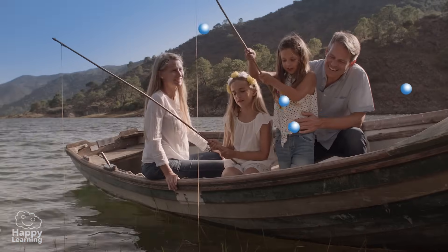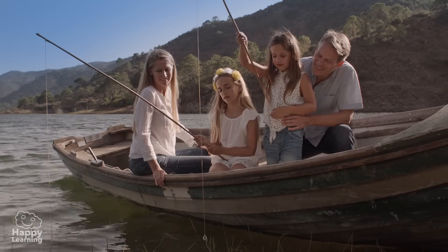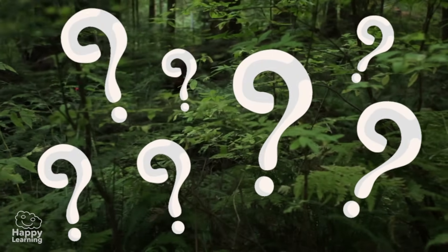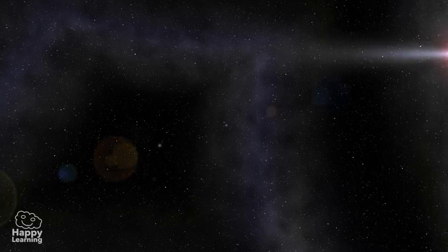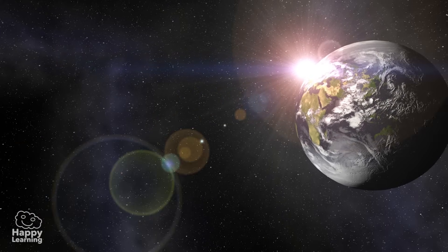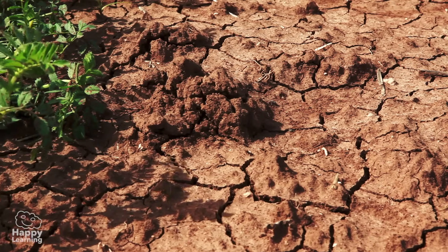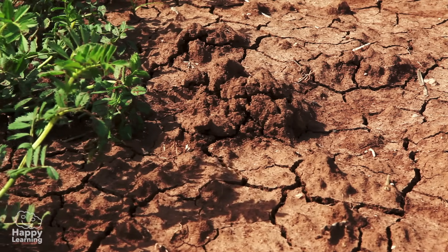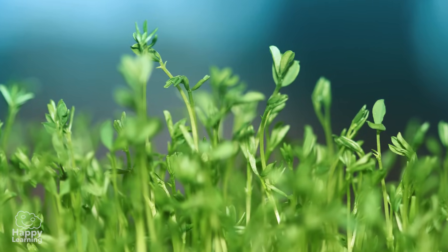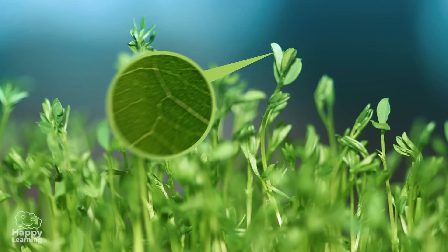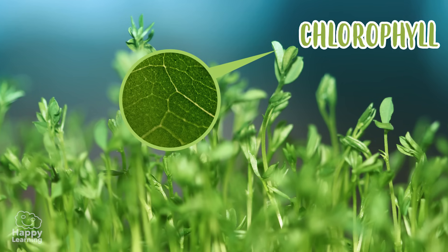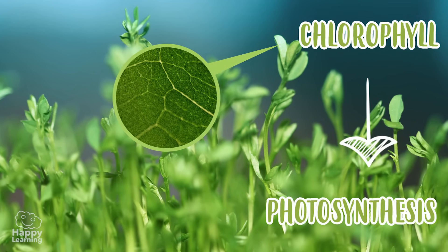And without oxygen, none of us would be here today watching this video. Are plants important or what? Plants were one of the first forms of life that appeared on Earth, thanks to their capacity not to depend on other living creatures to survive. Their most predominant colour is green, and this colour is called chlorophyll — an essential substance to perform photosynthesis.